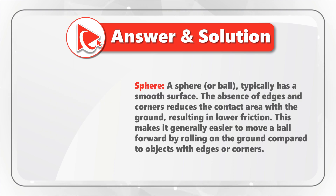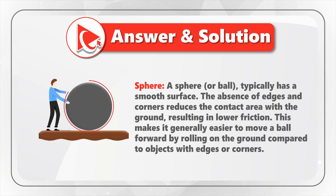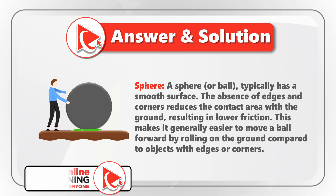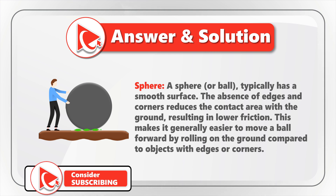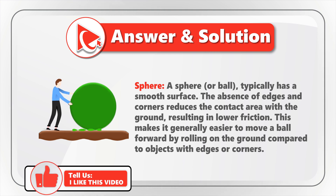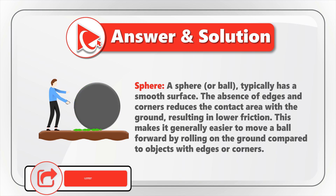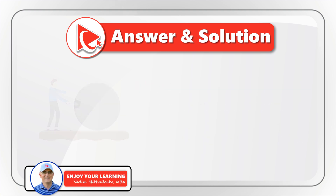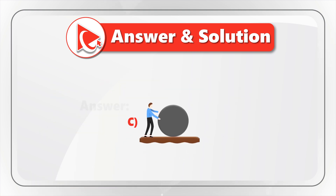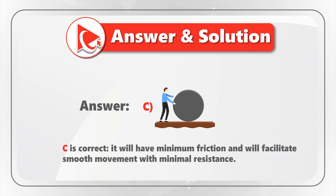Which brings us to Choice C — a sphere or ball, which typically has a smooth surface. The absence of edges and corners reduces the contact area with the ground, resulting in lower friction. This makes it easier to move the ball forward by rolling on the ground compared to objects with edges or corners. This is why Choice C is correct — it will have minimum friction and facilitate smooth movement with minimum resistance.